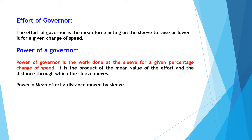The power of the governor is the work done at the sleeve for a given percentage change of speed. It is the product of the mean value of the effort and the distance through which the sleeve moves. So, power of the governor = mean effort × distance moved by the sleeve.